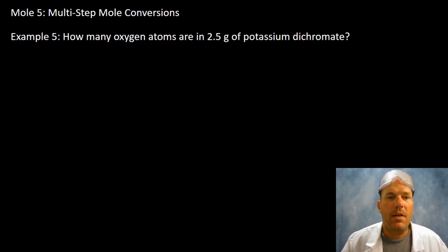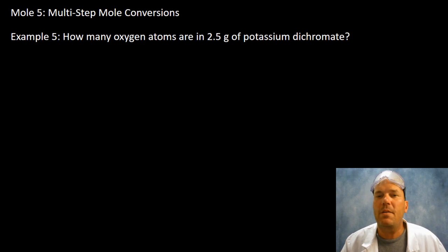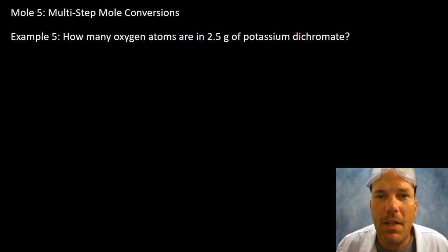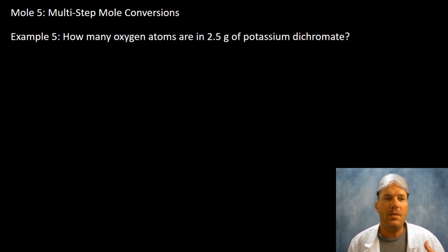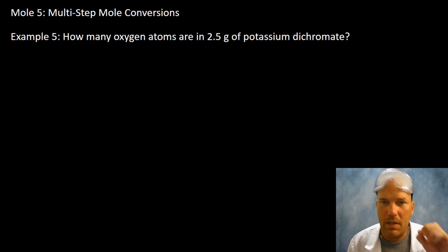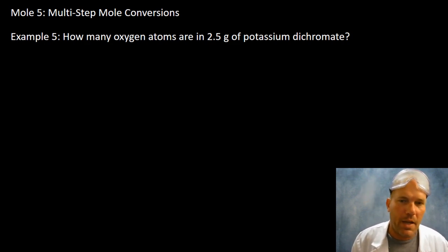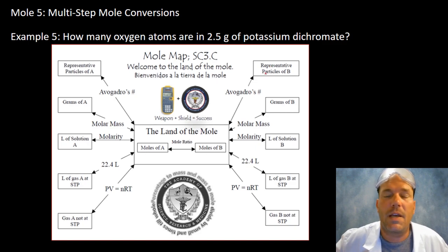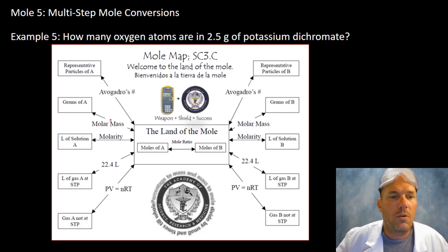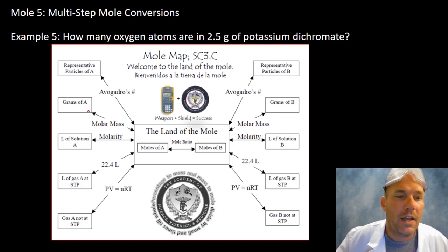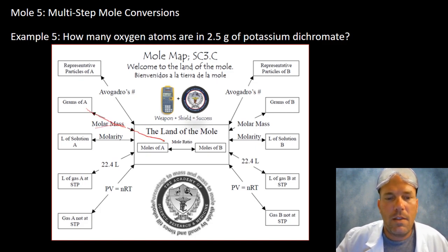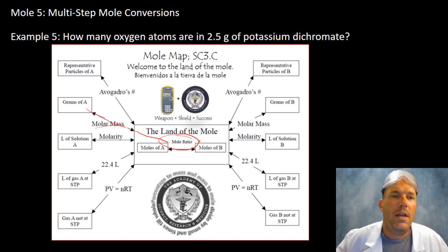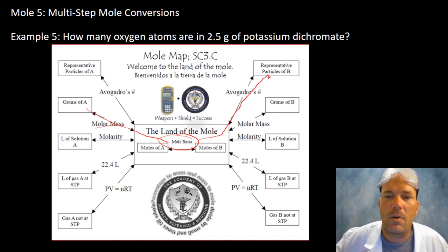Example five: how many oxygen atoms are in 2.5 grams of potassium dichromate? Hearing 'atoms' tells me we'll need Avogadro's number. Looking at the mole map: we start with grams of potassium dichromate, use molar mass to get to moles, then the mole ratio, and finally Avogadro's number to get atoms.